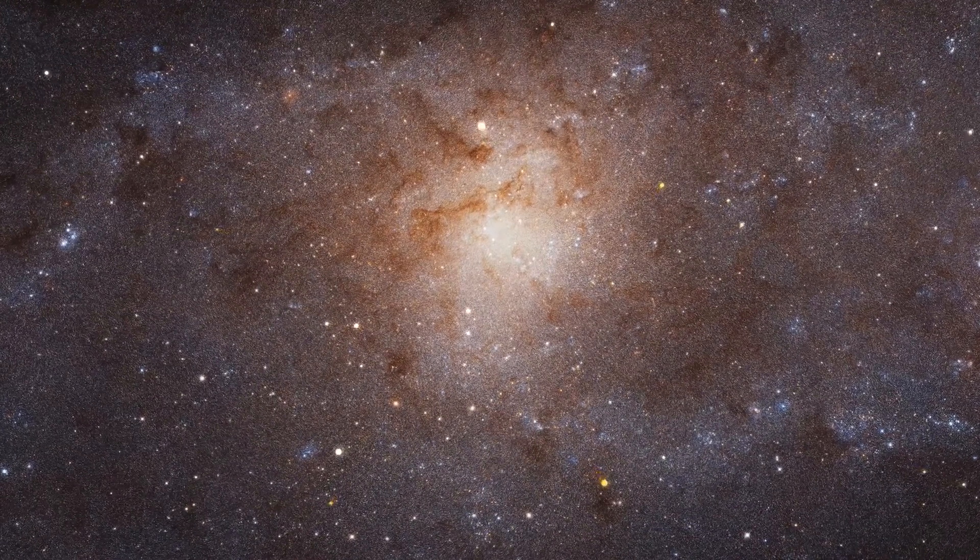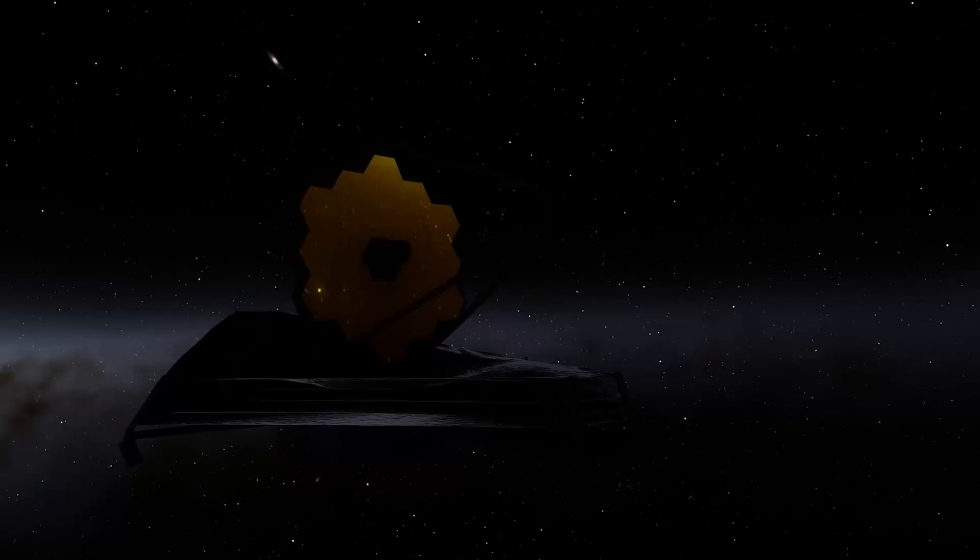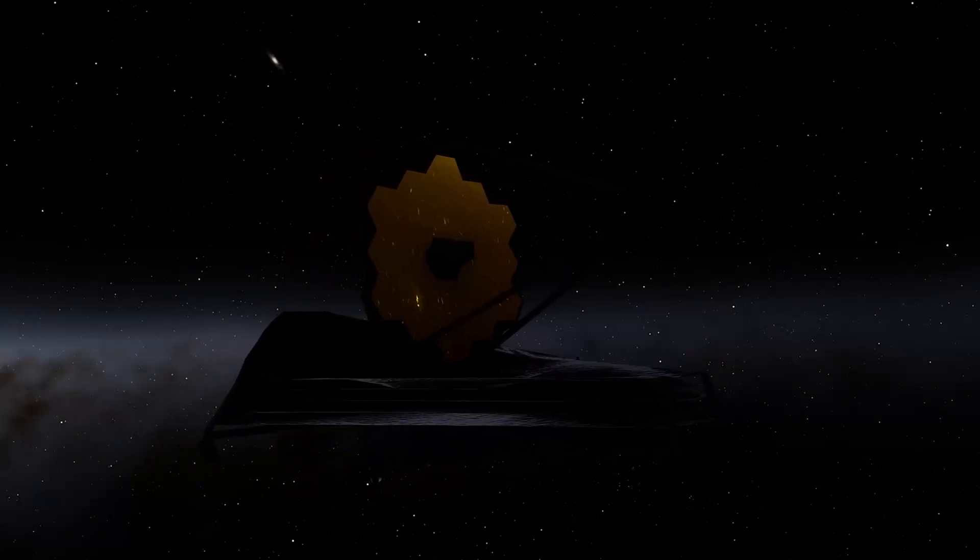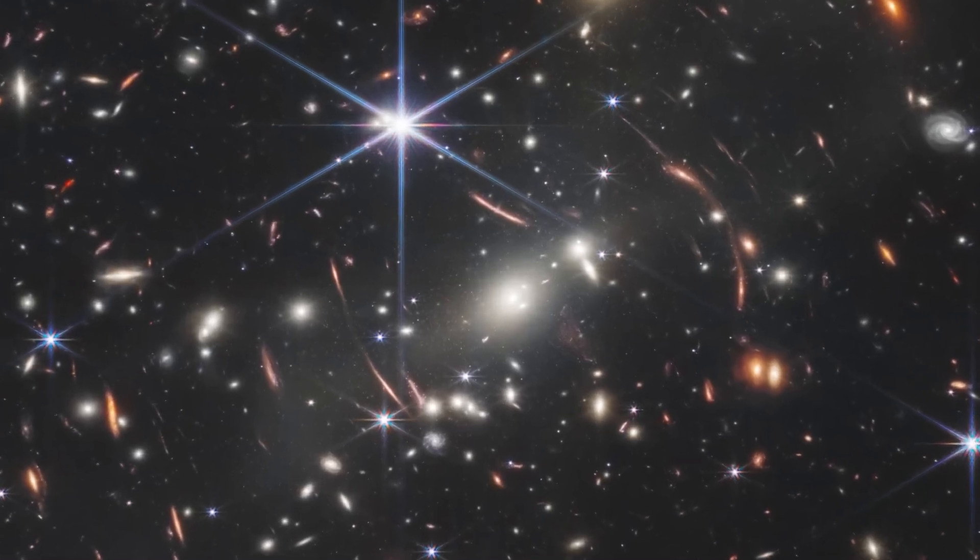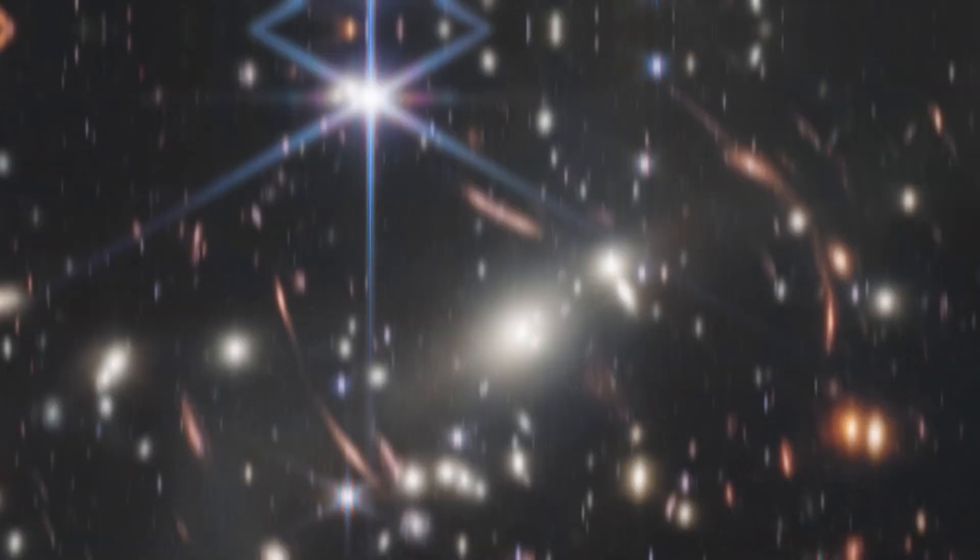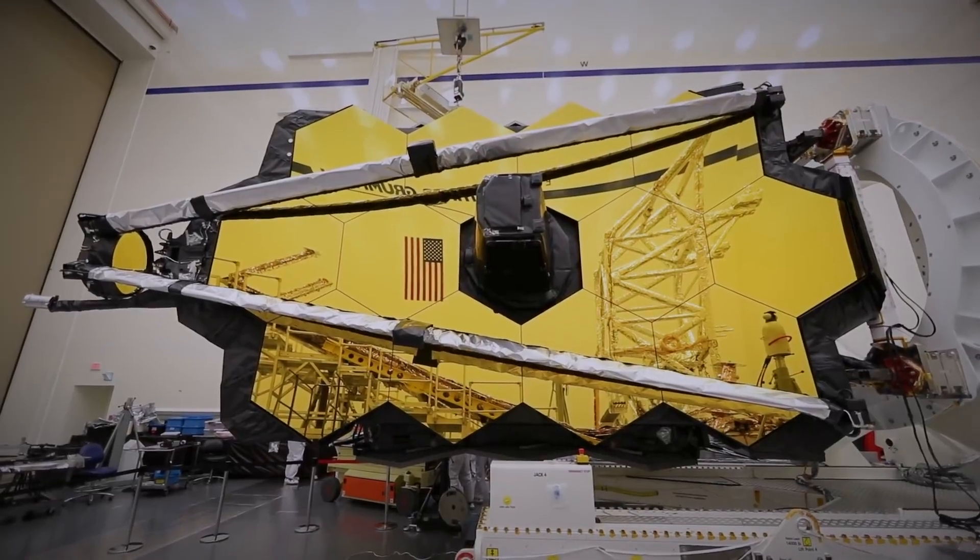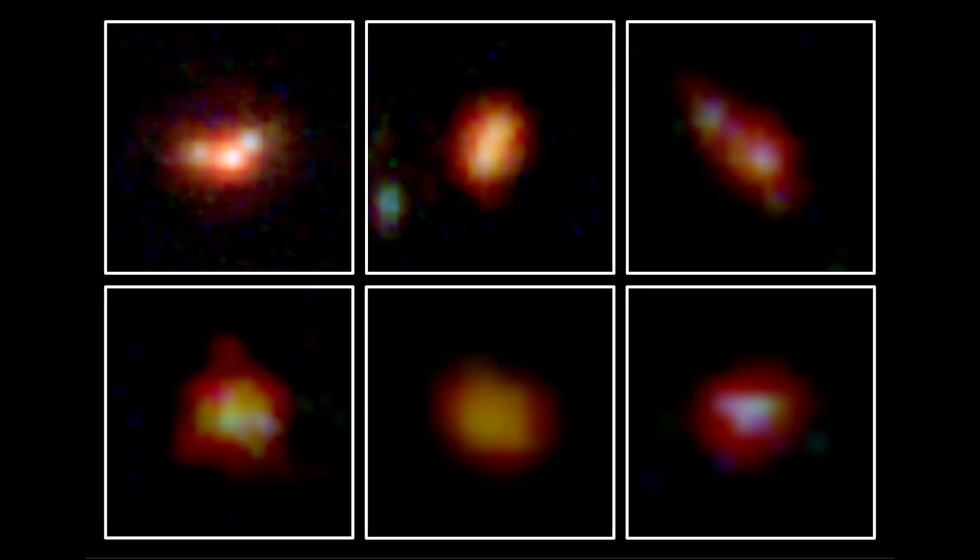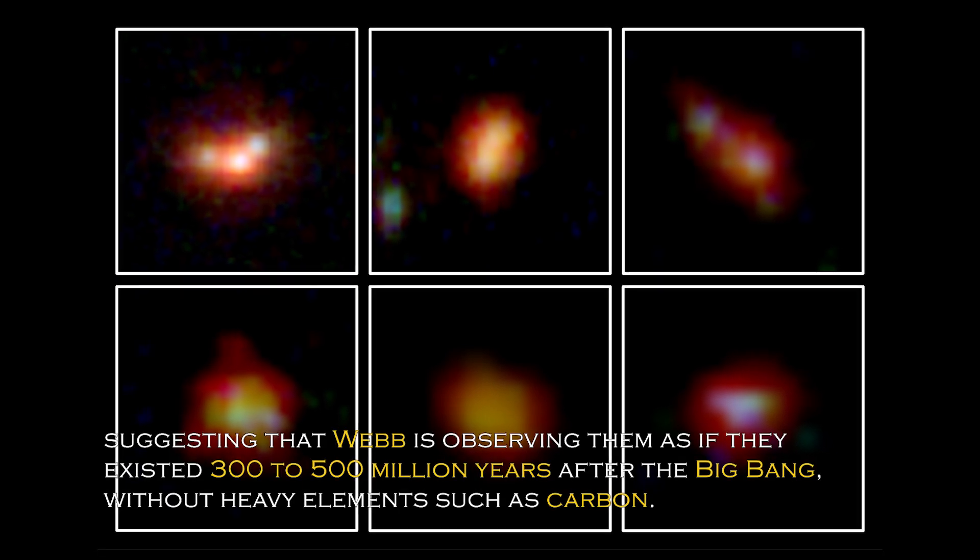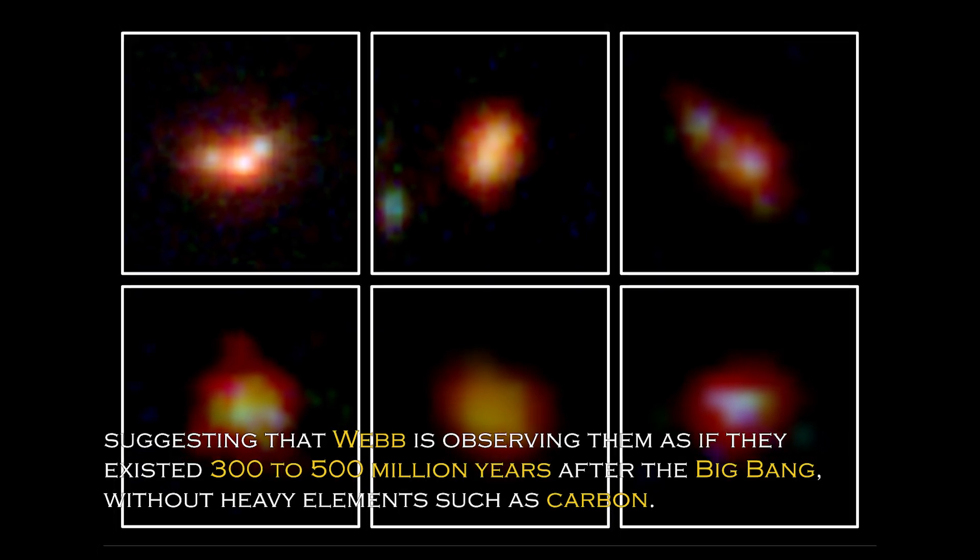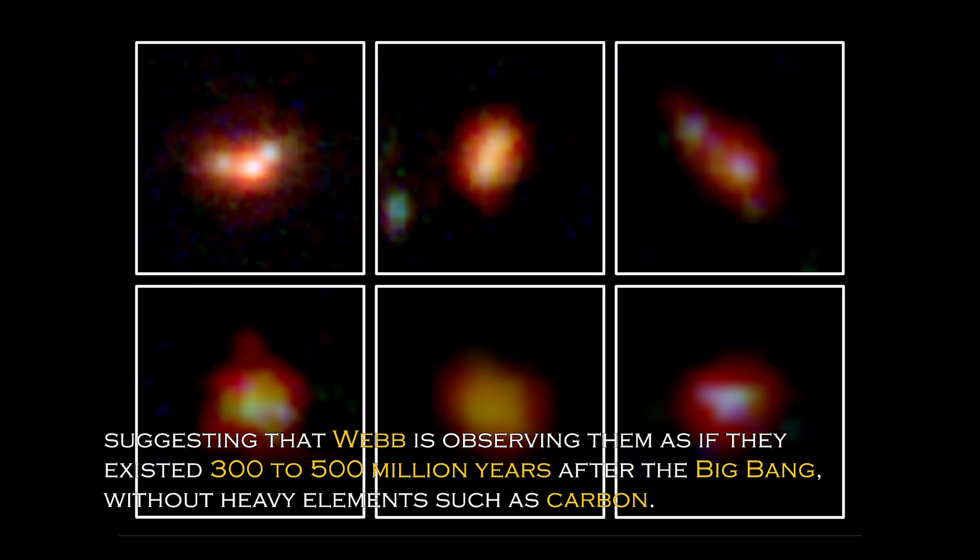This discovery has had a major impact on our understanding of the universe and has prompted NASA to develop even more powerful telescopes than the James Webb Space Telescope to confirm whether our understanding of the Big Bang is correct. Data obtained from Webb's spectrometer and near-infrared camera have revealed that four of the six primordial galaxies have extreme redshifts, suggesting that Webb is observing them as if they existed 300 to 500 million years after the Big Bang, without heavy elements such as carbon.